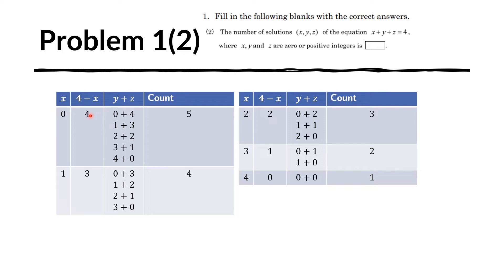What are the possible addends that form 4? It could be 0 plus 4, 1 plus 3, 2 plus 2, 3 plus 1, and 4 plus 0. All of these add to 4, and we are only using integers 0, 1, 2, 3, and 4. There are 5 possibilities here, so we write the count as 5.